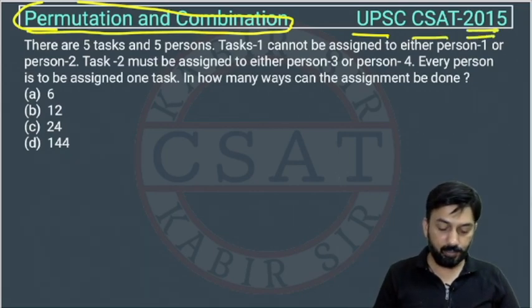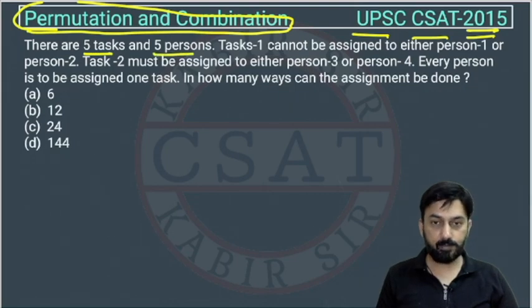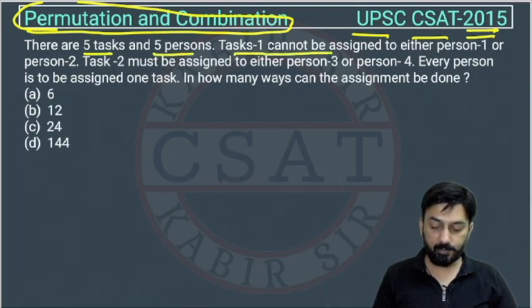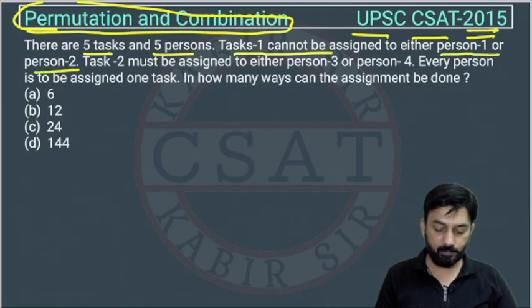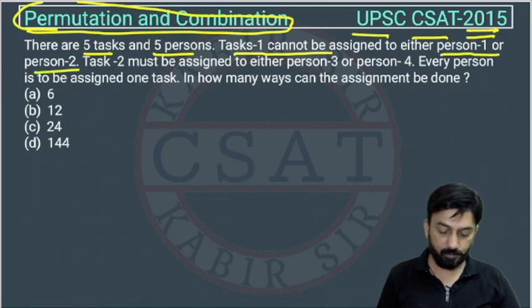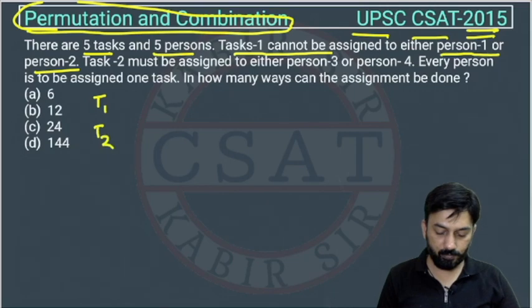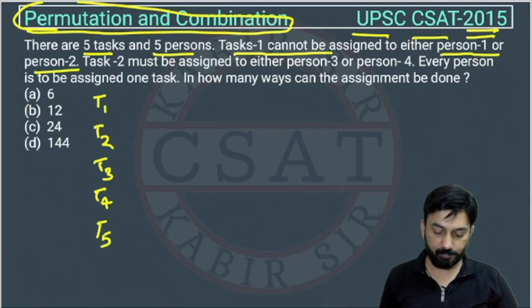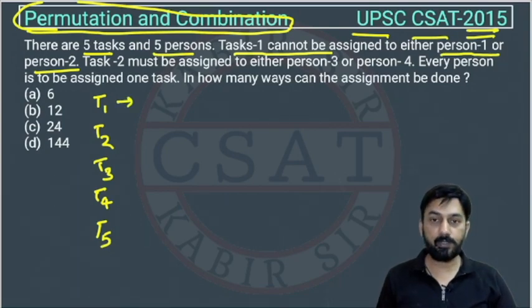There are five tasks and five persons: T1, T2, T3, T4, and T5. Task one cannot be assigned to either person one or person two, so it can be assigned to person three, person four, or person five.